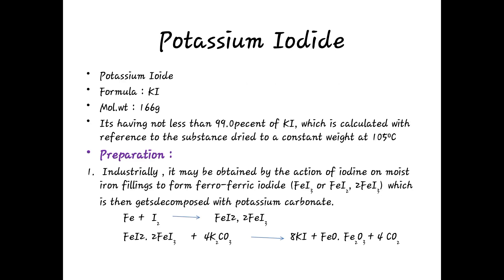Summary: potassium iodide has molecular formula KI and molecular weight 166 grams per mole. Preparation — first method: action of iodine on moist iron fillings forms ferroferric iodide, which reacts with potassium carbonate to form potassium iodide.